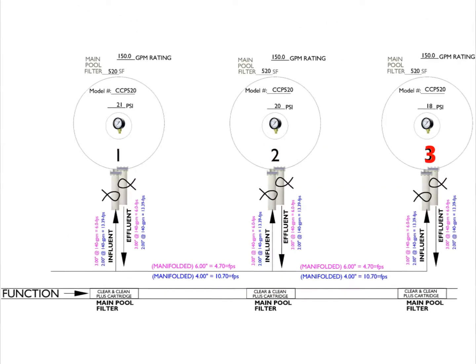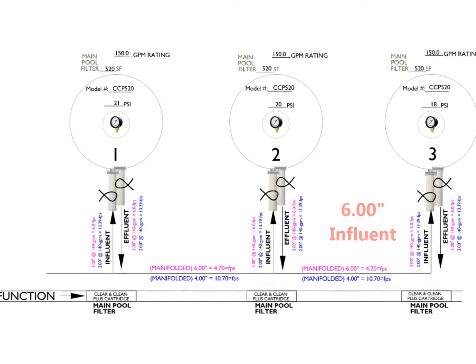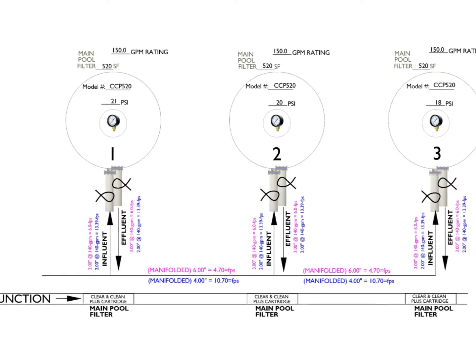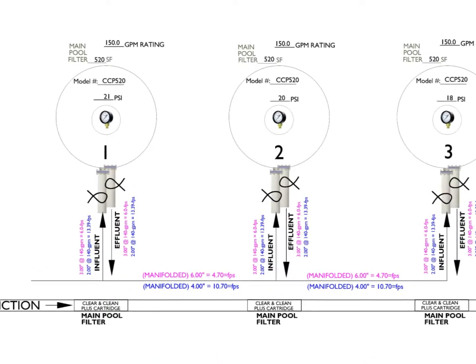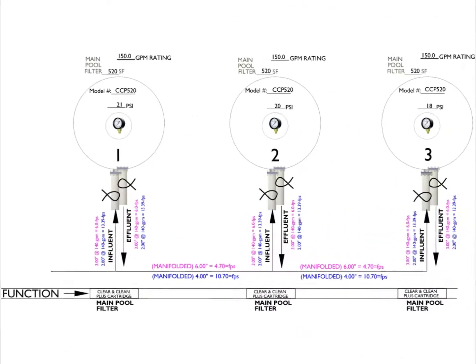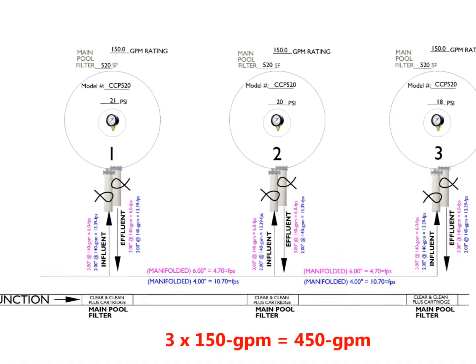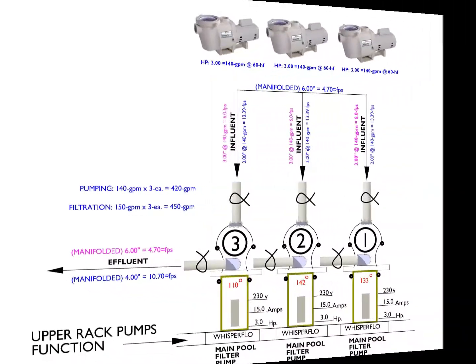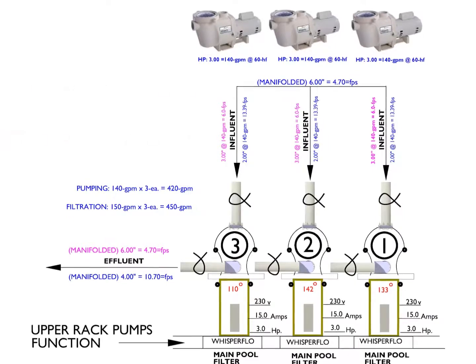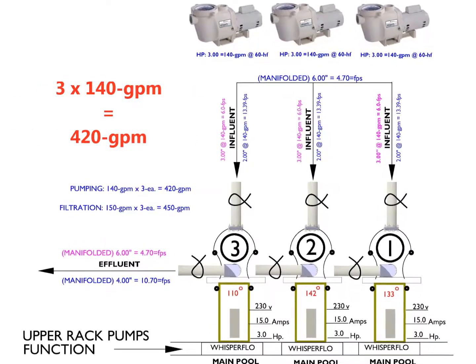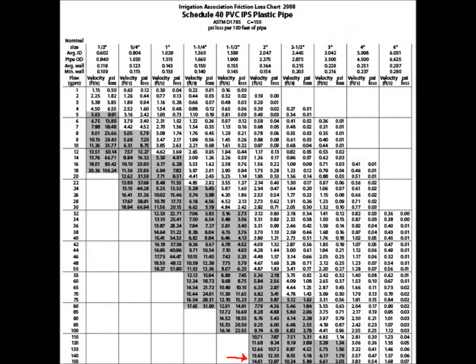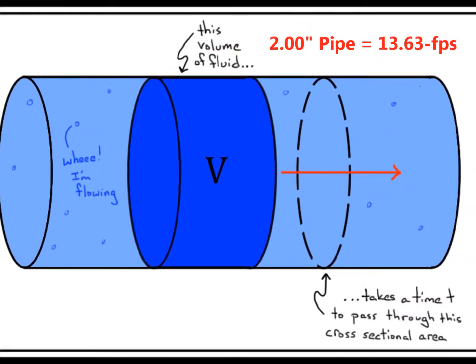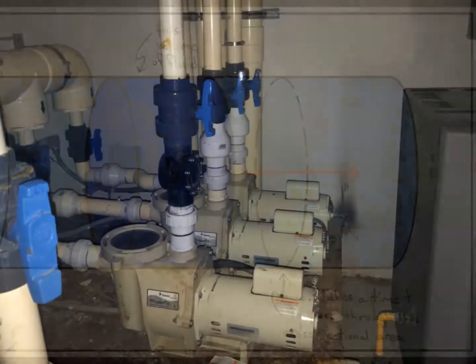There are three Clear and Clean Plus 520 square foot cartridge filters plumbed into one common 6-inch influent and 4-inch effluent manifold. These manifolds connect to the filters with 2-inch piping that causes considerable restriction at the combined pumping flow rate. The combined maximum flow rate for all three filters is 450 gallons per minute — 3 times 150 gallons per minute each — which is in balance, but the friction loss characteristics for the 2-inch pipe size are excessive due to hydraulic head losses at the flow rate velocity.